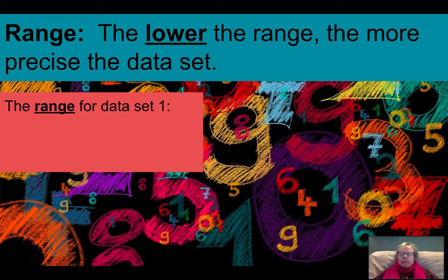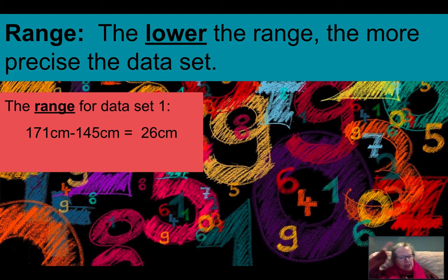So let's take a look at that. Now we'll look at data set 1. And we haven't looked at that. So the range for data set 1, 171 centimeters minus 145 centimeters gives you 26 centimeters.